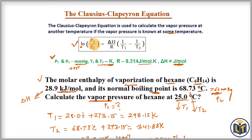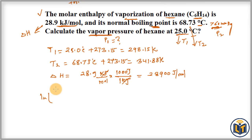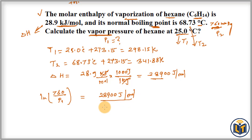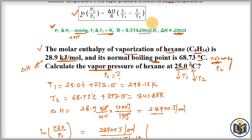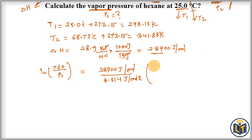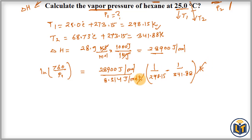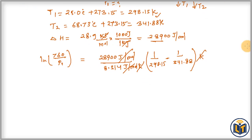Plugging into the formula: ln(P2/P1) = ln(760/P1) = (28,900 J/mol) / (8.314 J/mol·K) × (1/T1 − 1/T2). Substituting temperatures: 1/298.15 − 1/341.88. Units of Kelvin cancel, joules per mole cancel, and since P2 is in mmHg, P1 will also be in mmHg.